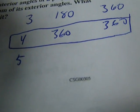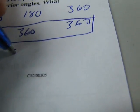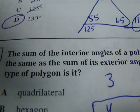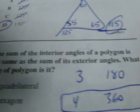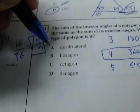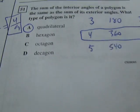Just check a pentagon. A pentagon, five-sided figure, it's going to be 540 for the interiors and 360. So the question is, if the sum of the interiors is the same as the sum of the exteriors, what kind of polygon is it? The only place where that's true is in a four-sided figure or a quadrilateral. So our answer is A. That was 51.